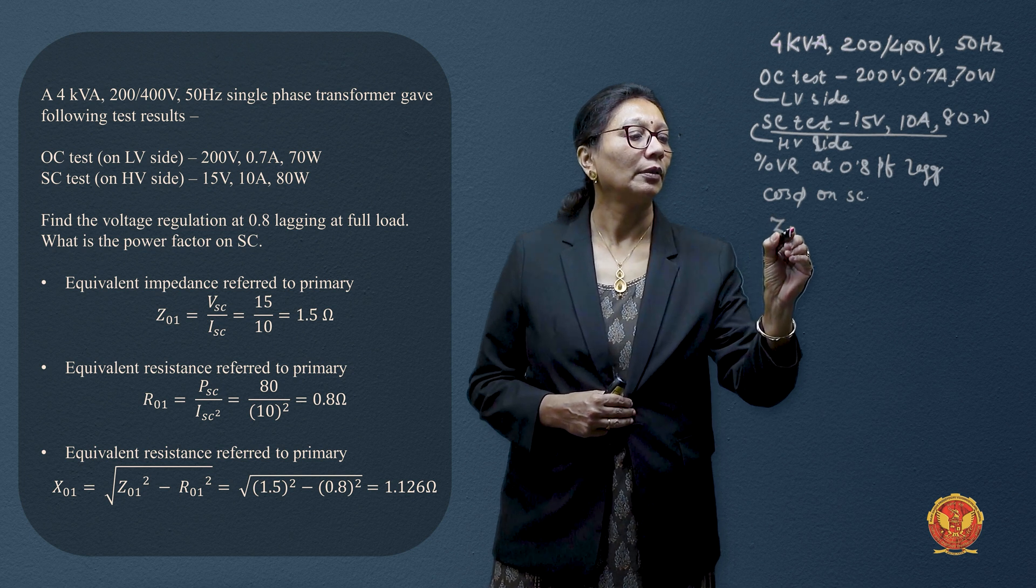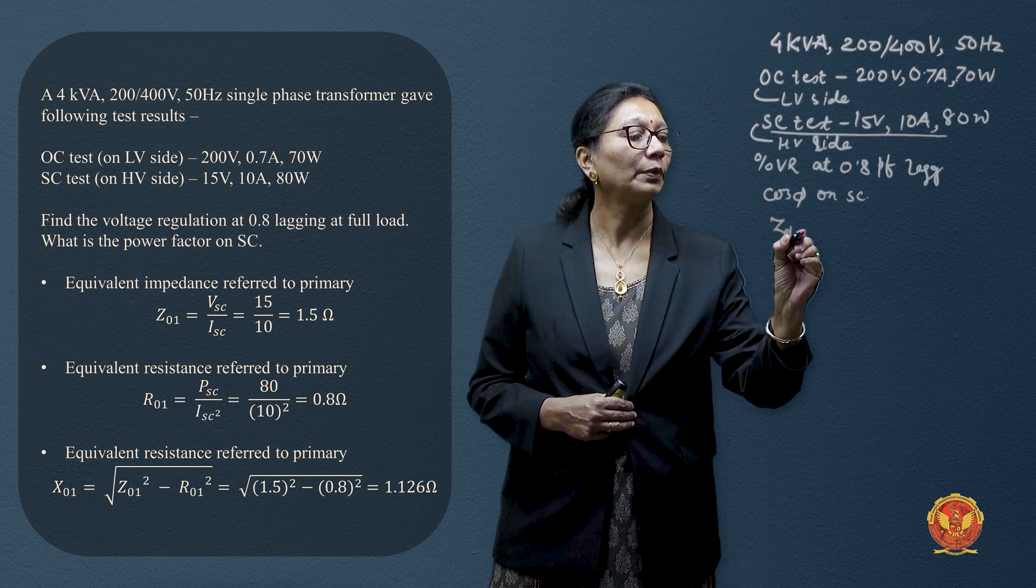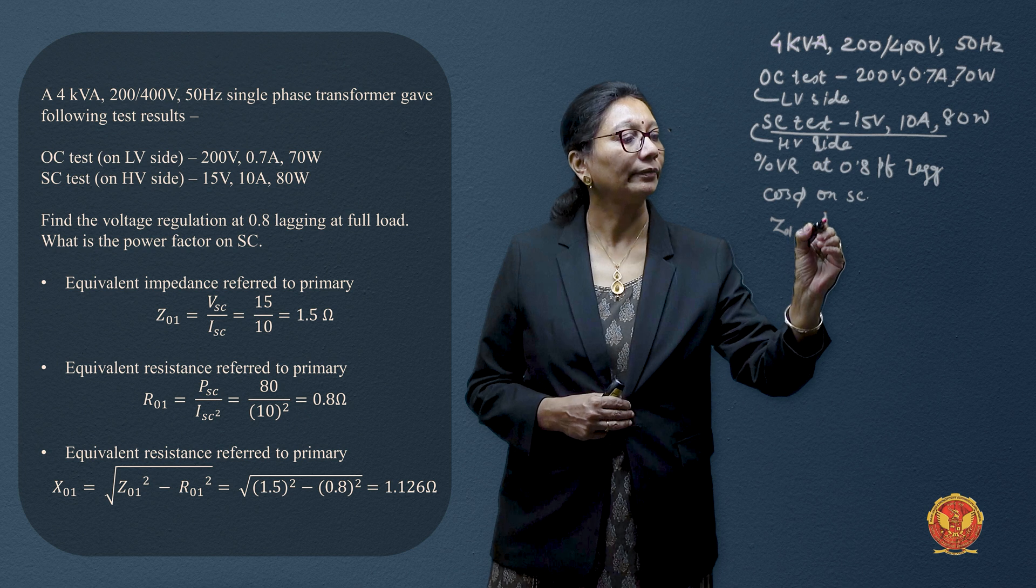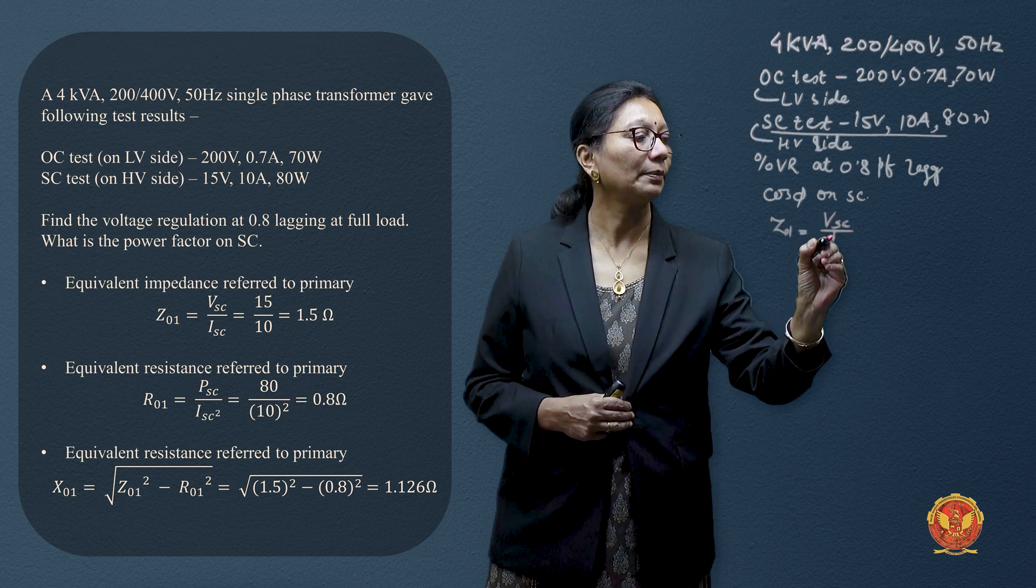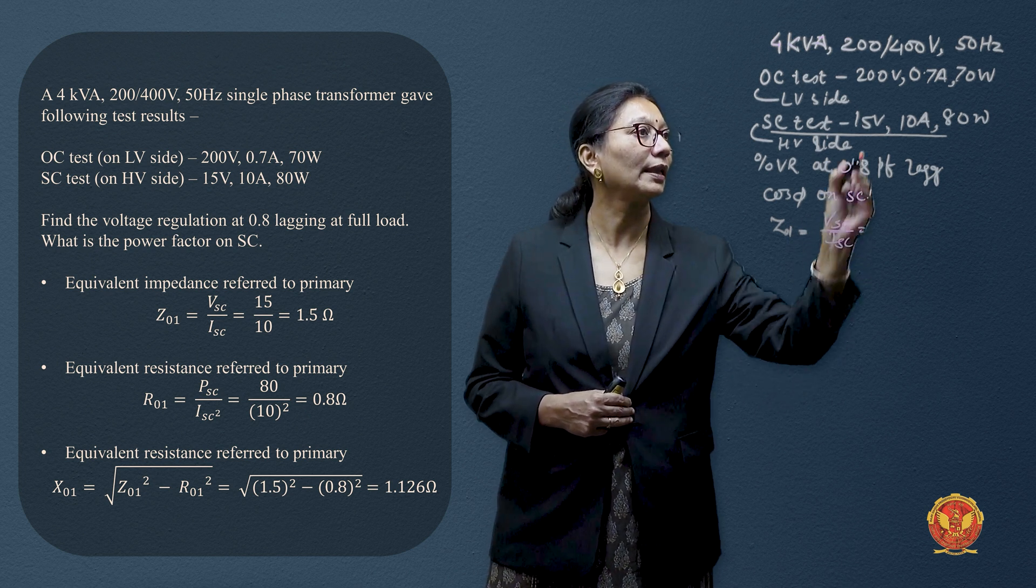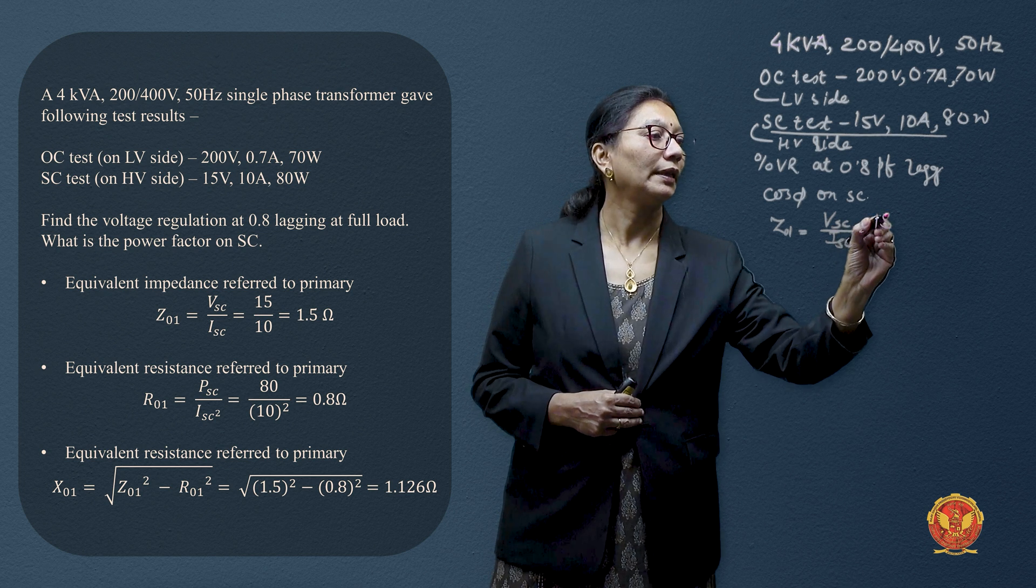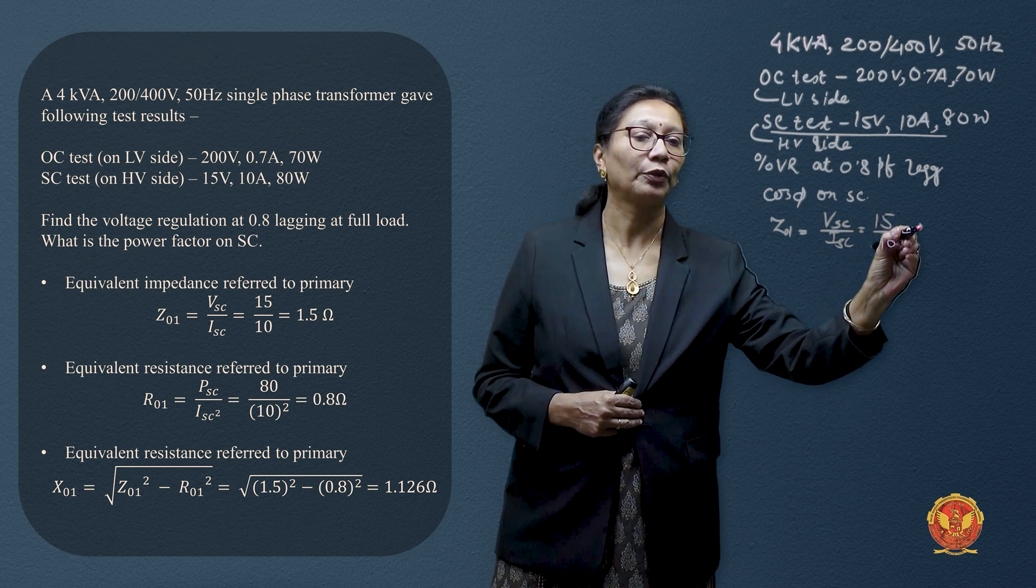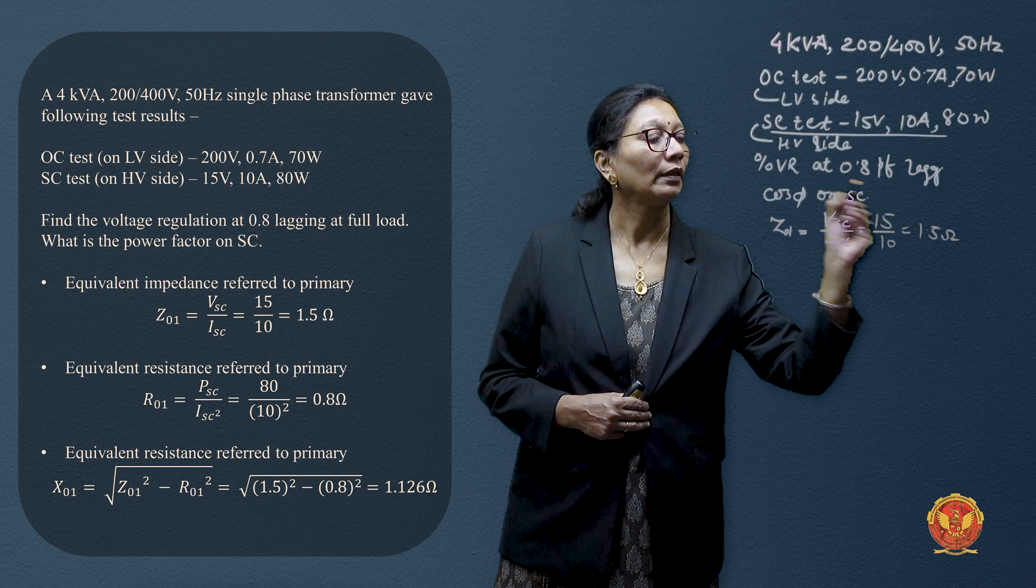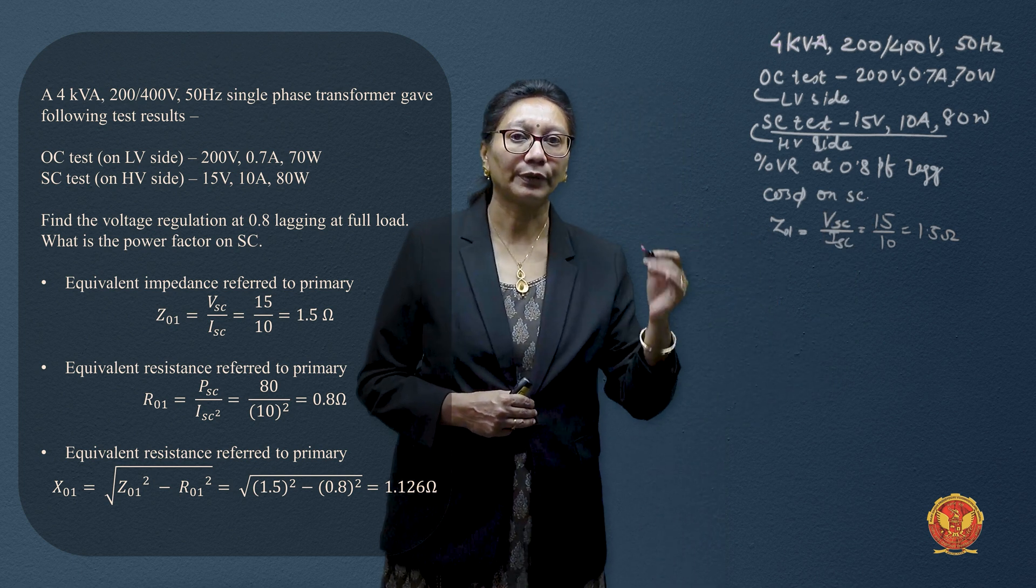Z equivalent referred to primary would be what? V by I. V_SC by I_SC gives us impedance as 15 by 10, that is 1.5 ohms. Then equivalent resistance referred to primary.